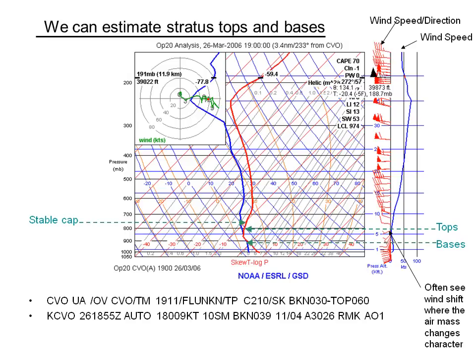Reading the pilot report and METAR for the corresponding time — both around 1900 Zulu — the pilot report was 11 minutes later, over Corvallis in a Cessna 210, reporting broken clouds at 3,000, tops 6,000. That's pretty close to what we estimated from the skew-T. The actual METAR for Corvallis five minutes earlier was 10 miles visibility and 3,900 broken. There's a slight discrepancy — the airport wasn't exactly where the airplane was, and it was 15 minutes later — but both are in substantial agreement with the skew-T.